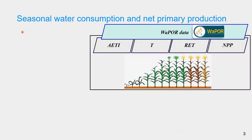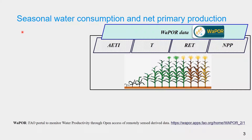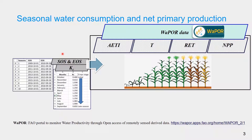The seasonal water consumption and net primary production are calculated from the VAPOR dataset and crop-specific ground or local information. VAPOR is an FAO portal to monitor water productivity through open access of remotely sensor-derived data. The crop-specific data includes crop season and crop coefficients.